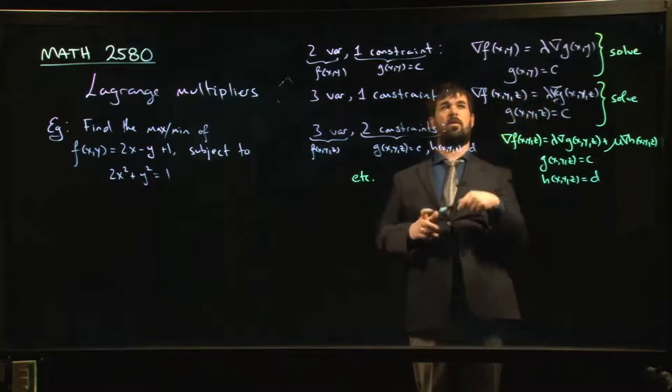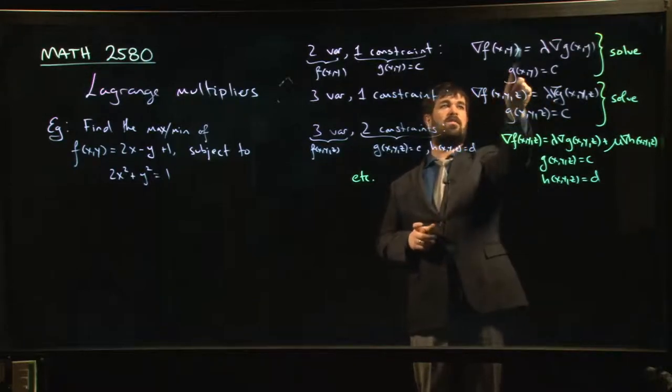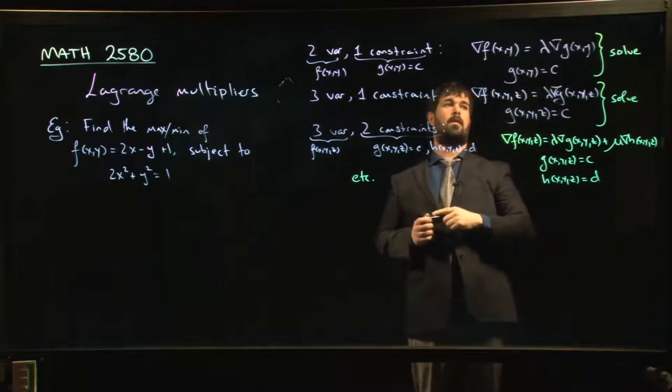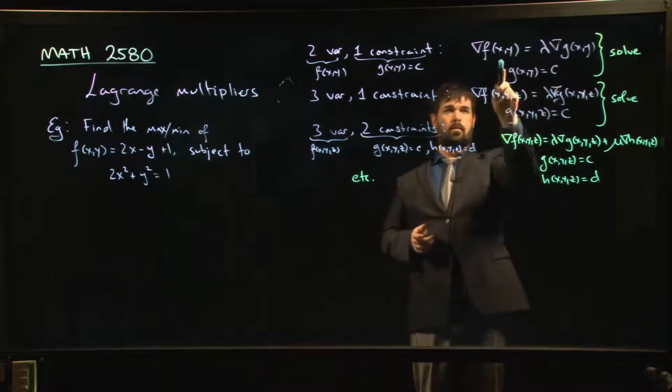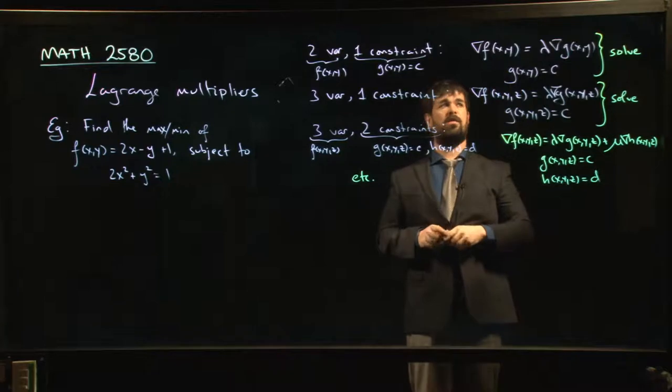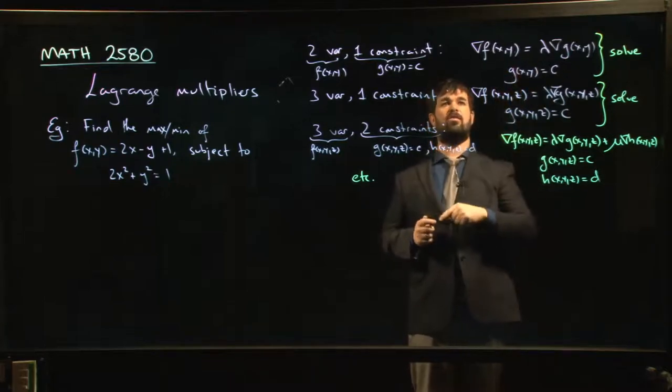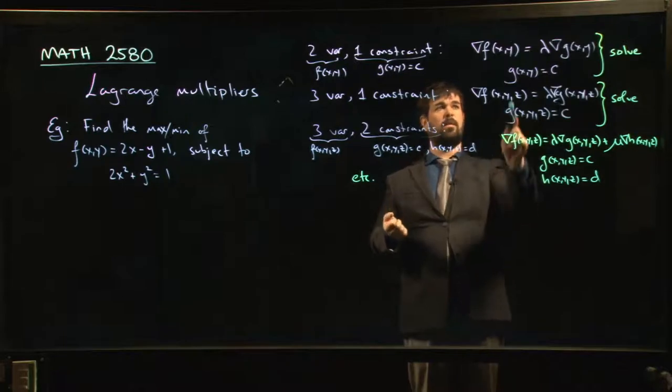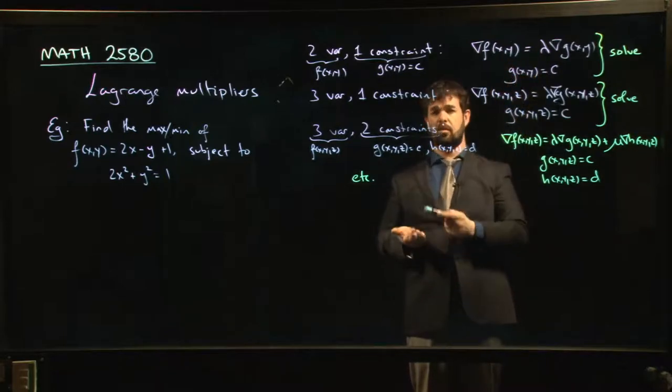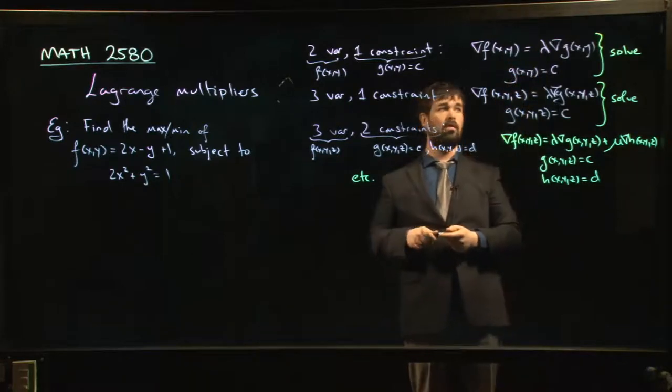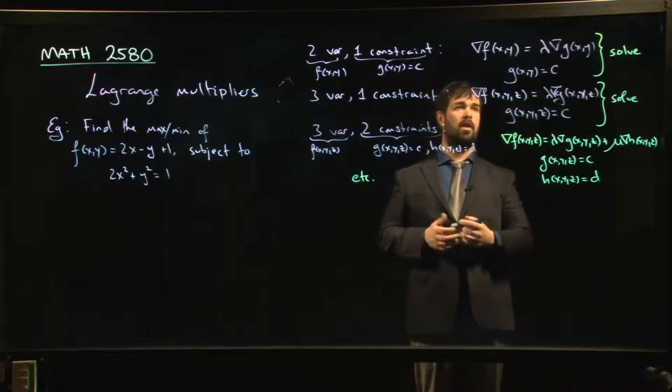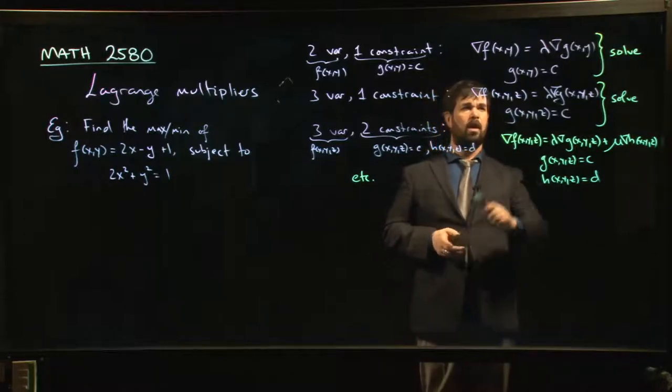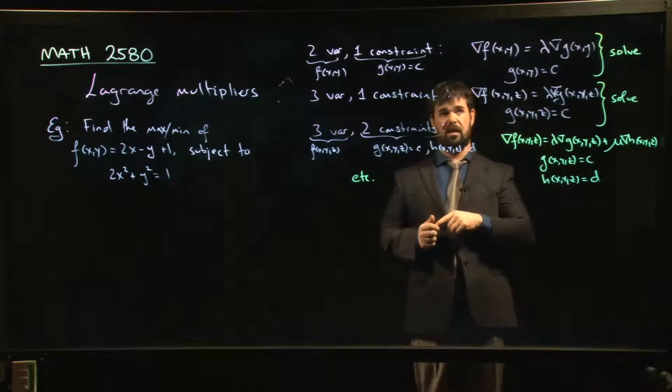You have this Lagrange multiplier equation - the gradient of f must be a multiple of the gradient of g. And now, those gradients have two components in them. So this only gives you a pair of equations, one for each component. But there are three variables, x, y, and lambda. So you do need a third equation if you want to solve, if you want to have a finite number of solutions.